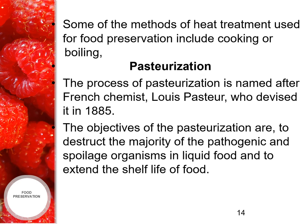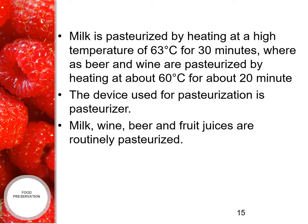Some of the methods of heat treatment used for food preservation include cooking or boiling. One example is pasteurization. The process of pasteurization is named after French chemist Louis Pasteur, who devised it in 1885. The objectives of pasteurization are to destroy the majority of pathogenic and spoilage organisms in liquid food and to extend the shelf life of the food.